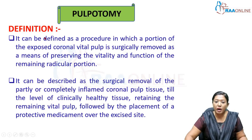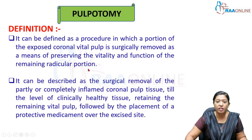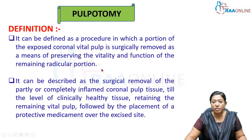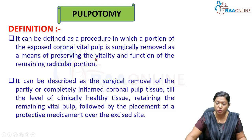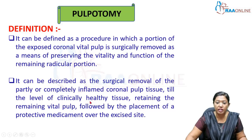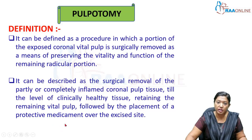Pulpotomy can be defined as a procedure in which a portion of the exposed coronal vital pulp is surgically removed as a means of preserving the vitality and function of the remaining radicular portion. Only the inflamed or infected coronal pulp is completely removed, while the pulp present inside the radicular dentin is maintained to preserve the vitality of the tooth. It can also be described as surgical removal of the partly or completely inflamed coronal pulp tissue up to the level of healthy tissue, with subsequent placement of a protective medicament over the excised site.